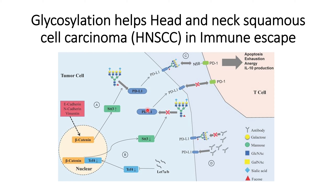With STT3 downregulated, glycosylation of the PD-L1 ligand does not occur properly, resulting in deglycosylated PD-L1 expressed on tumor cells. This deglycosylated PD-L1 is unable to interact with PD-1 receptors on T cells, so immune suppression does not occur and T cells can detect and act against the tumor cells.